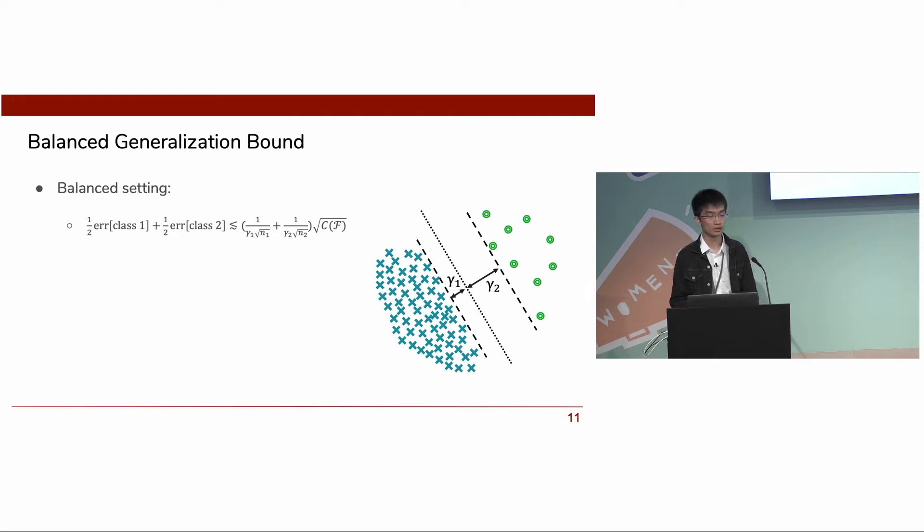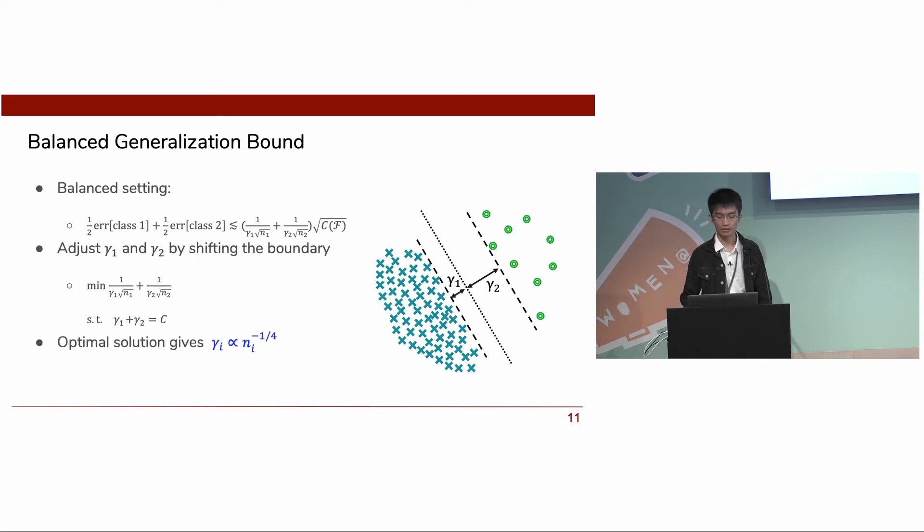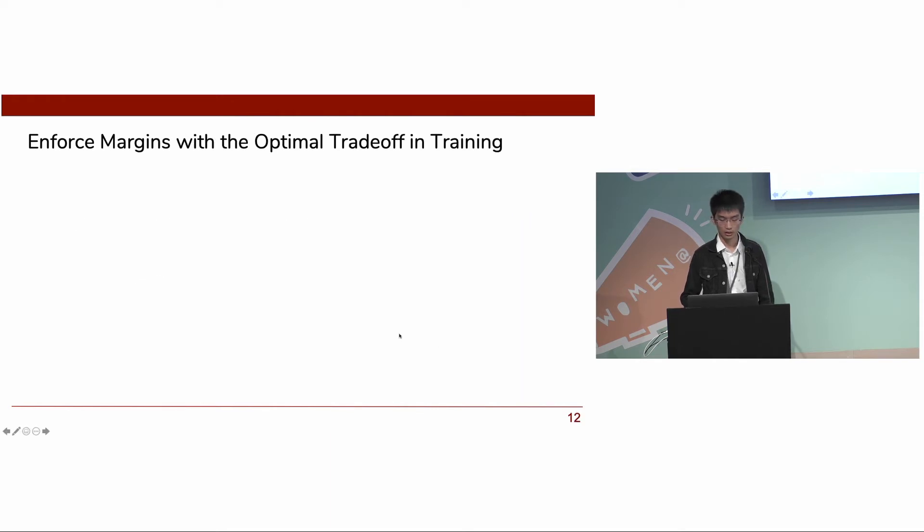We can reformulate the bounds into the following form. We want to minimize the right-hand side given the constraint that the sum of the margin is constant, so that we could have a tighter bound on the balanced error. This could be done by solving a constraint optimization problem analytically. The optimal solution gives that gamma should be proportional to the inverse of the fourth root of N1. Notice that standard error will result in equal margin. So what we're trying to do is allocate more margin for the minority classes. It's actually one way of adding stronger regularization on minority classes.